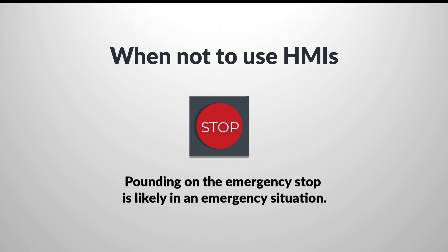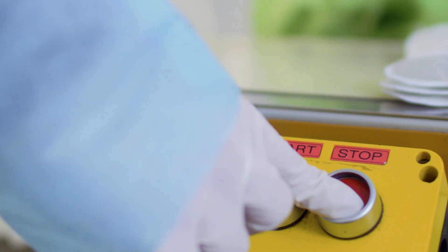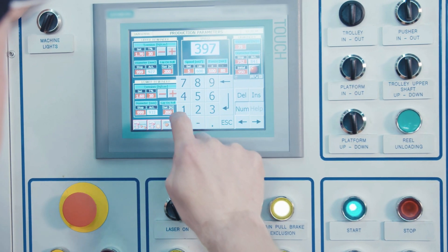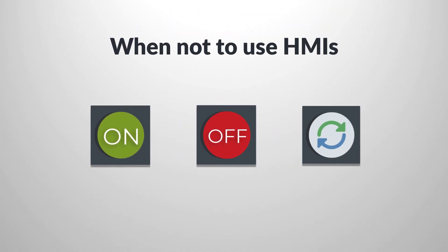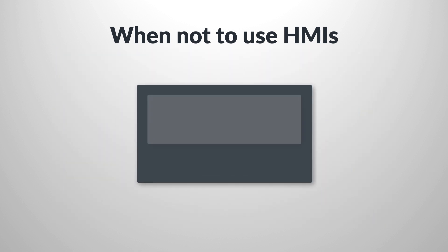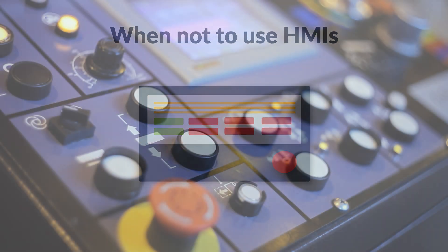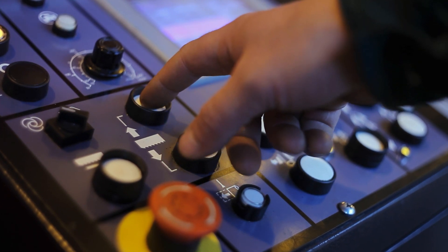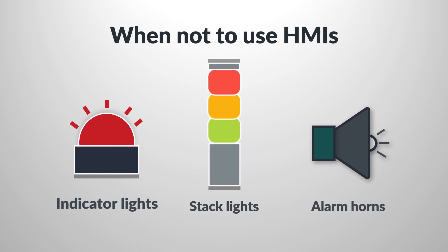Pounding on the emergency stop is likely in an emergency situation — it cannot be a button on the HMI screen. Safety standards require it to be a hardwired push button. Some will argue that with advances in HMIs and computer graphics, machine power on, power off, reset functions, all fault indication, machine status, and operation can be provided on screen. While the HMI can do it all except the emergency stop, it's not always the quickest or most robust method of operation during production. Sometimes the use of push buttons that are poked often, and indicator lights, stack lights, and alarm horns are better options. These devices can greatly reduce the response time to a machine fault condition and provide machine status information at a glance or without looking.